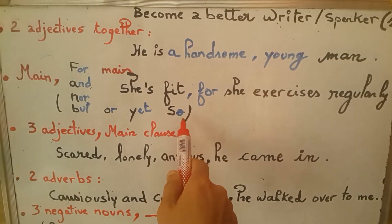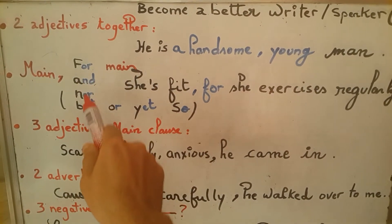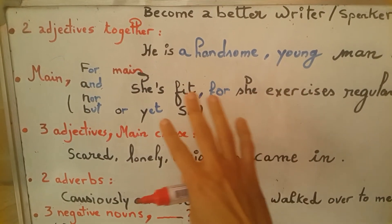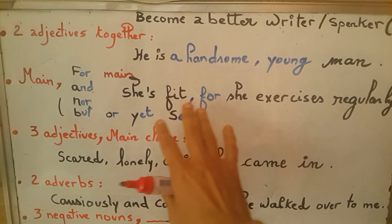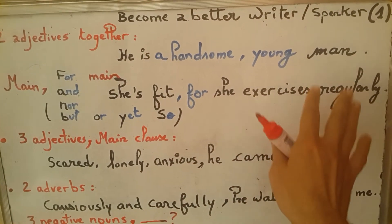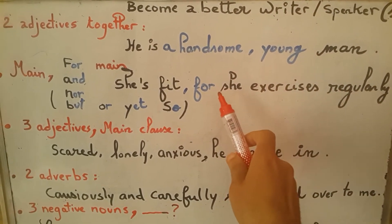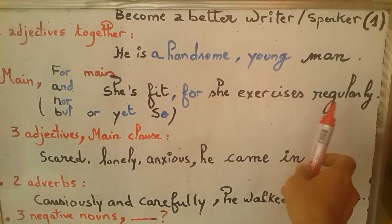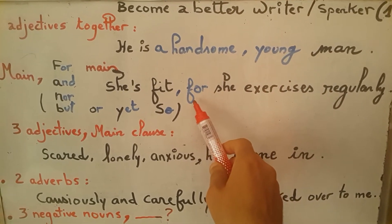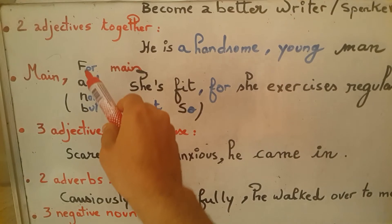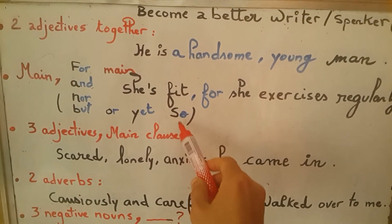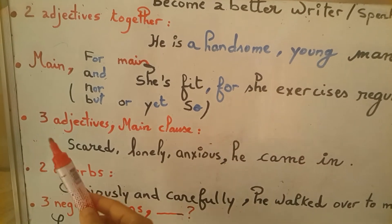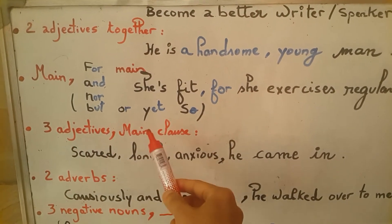The main clause — FANBOYS — these are coordinating conjunctions and their function is to connect two sentences. For example: 'she is fit, for she exercises regularly' — here 'for' has the meaning of 'because.' Note that 'for' is very formal, and if you want to use one of these coordinating conjunctions, make sure that you put a comma before them.